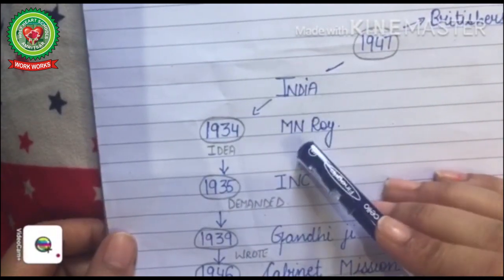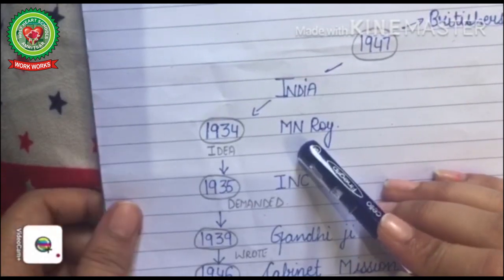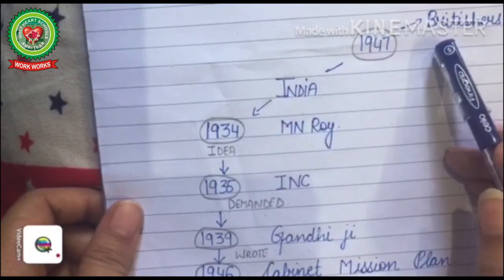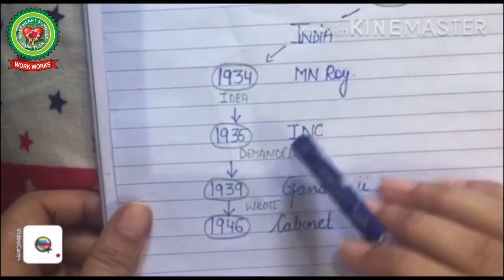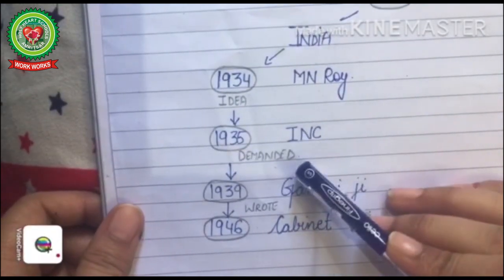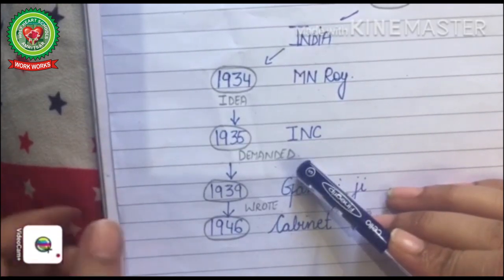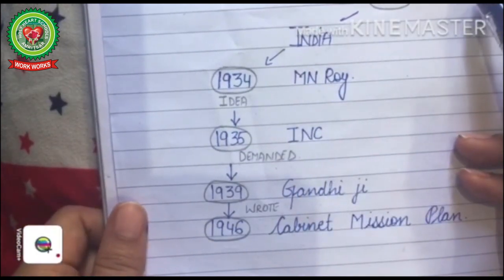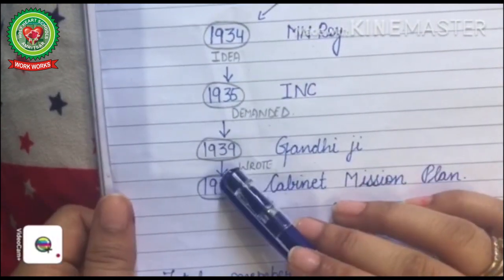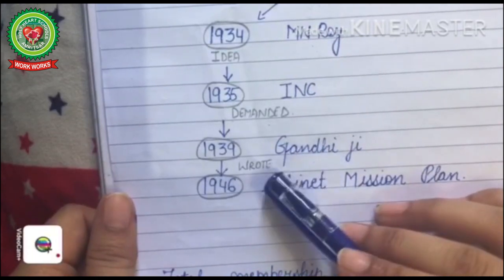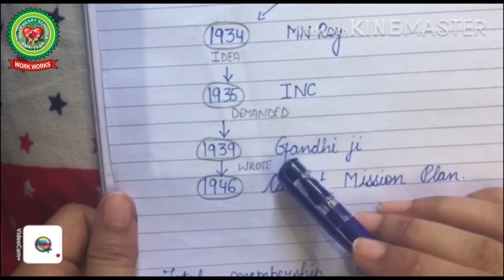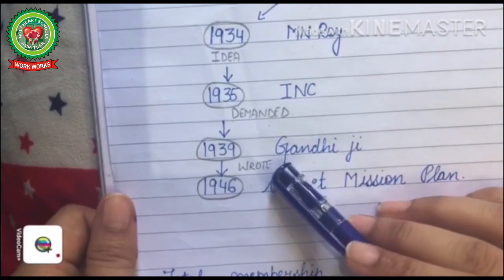In 1934, MN Roy, a pioneer of the Communist movement, proposed the idea of a Constituent Assembly, but it was rejected by the British. Then in 1935, the Indian National Congress demanded a Constituent Assembly from the British, but again their proposal was rejected. Again in 1939, Gandhiji wrote that they would frame a Constituent Assembly to write the Constitution — the rules and regulations for the Indians.